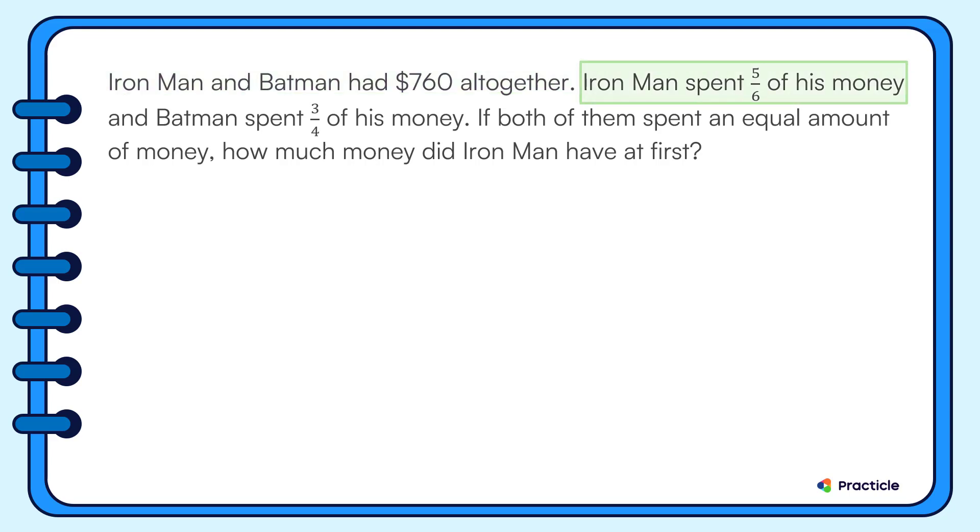Iron Man spent five-sixths of his money, and Batman spent three-quarter of his money. Since we're given two different fractions, we can draw a comparison model to help us see this better. Before we do that, let's look at a very important clue in the next sentence.